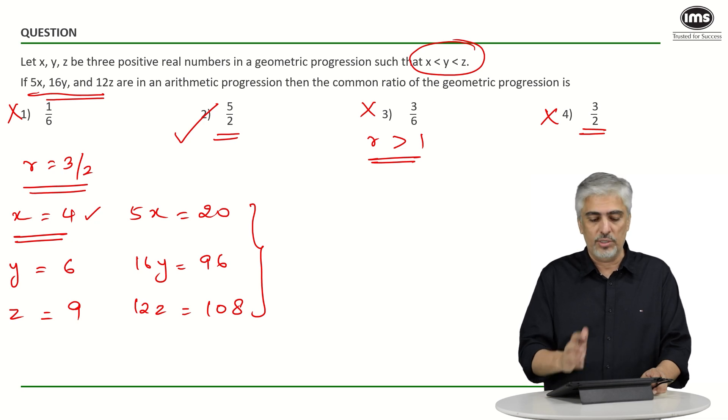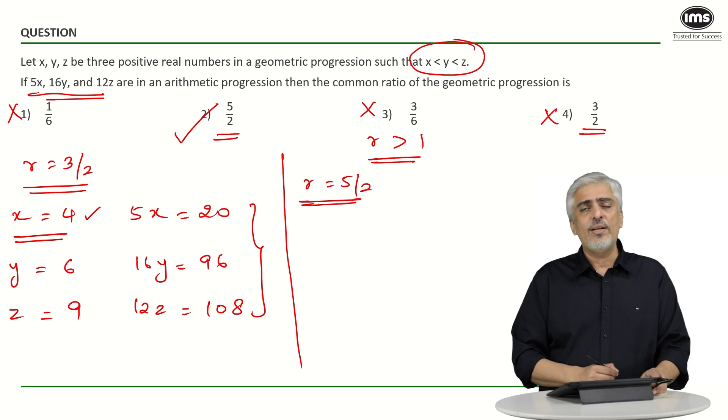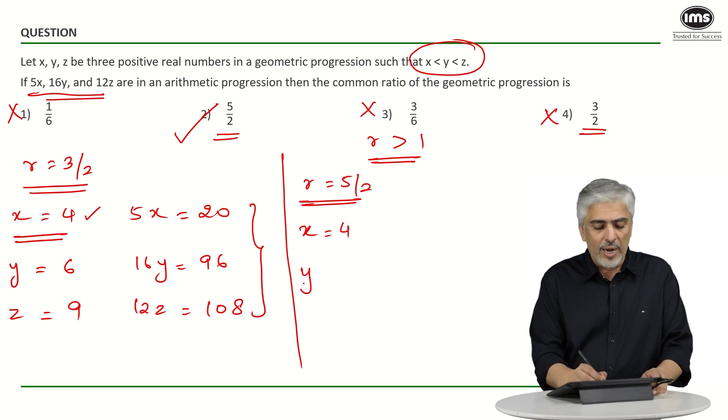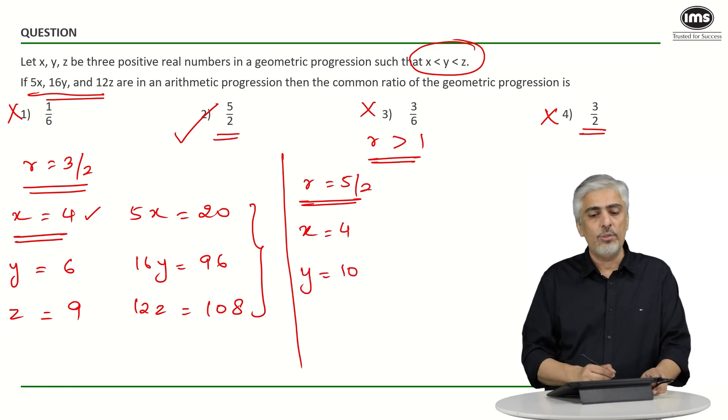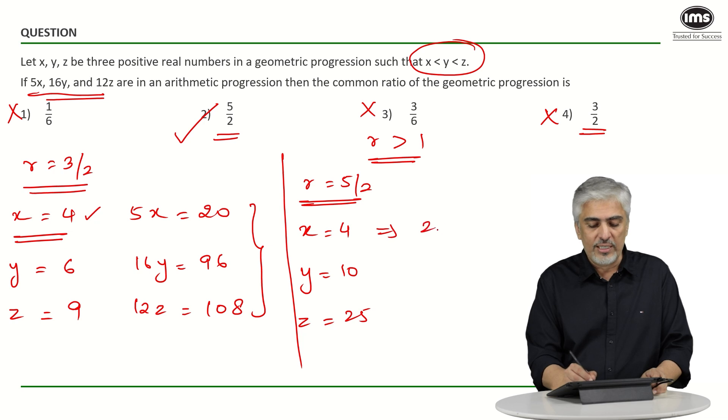This is not something you should do in the exam. If you eliminated three options, you should mark the fourth option. But just taking r as 5 by 2, let's think what would happen. If I took r as 5 by 2, again start with the same value of x: x is 4, y would be 10, that's 4 into 5 by 2, z would be 25, that's 10 into 5 by 2.